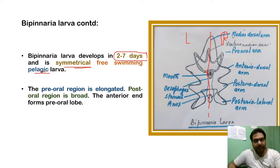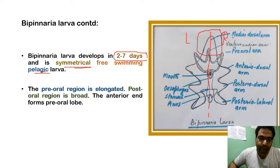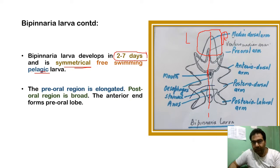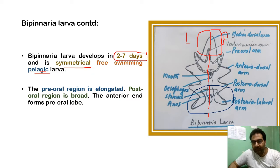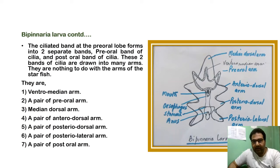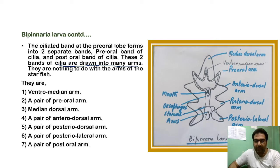The bipinnaria larva develops in three to seven days and is bilaterally symmetrical — it can be divided exactly into left and right portions. It is a free-swimming pelagic larva, present on the surface of the open sea, because its diet consists of diatoms and plankton. The pre-oral region is elongated while the post-oral region is broad. The anterior end forms the pre-oral lobe. The ciliated band at the pre-oral lobe forms into two separate bands — a pre-oral band and a post-oral band of cilia — and these two bands are drawn into many arms.